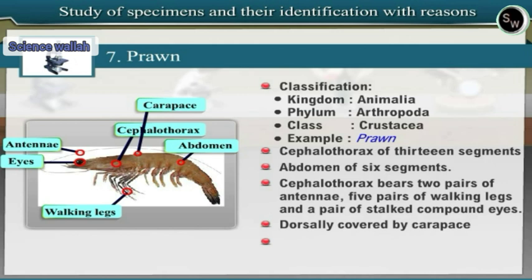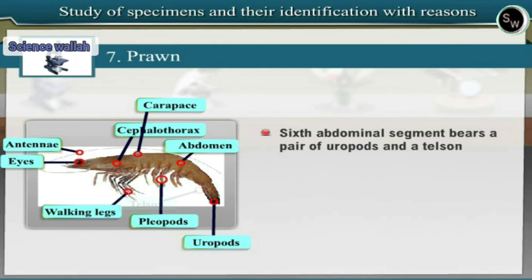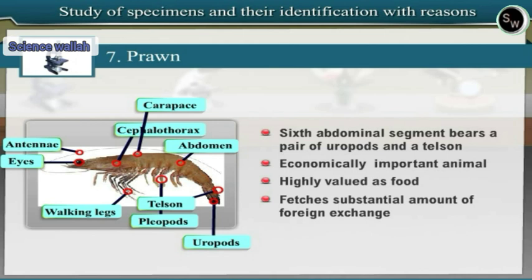The first five abdominal segments bear paired biramous appendages called pleopods, while the sixth abdominal segment bears a pair of uropods and a telson. Prawn is an economically important animal as its flesh is highly valued as food and it fetches a substantial amount of foreign exchange due to exports.